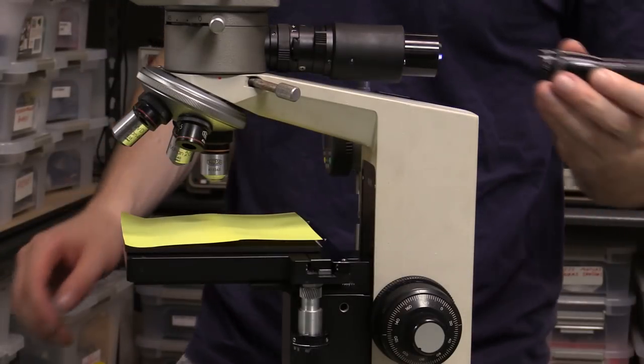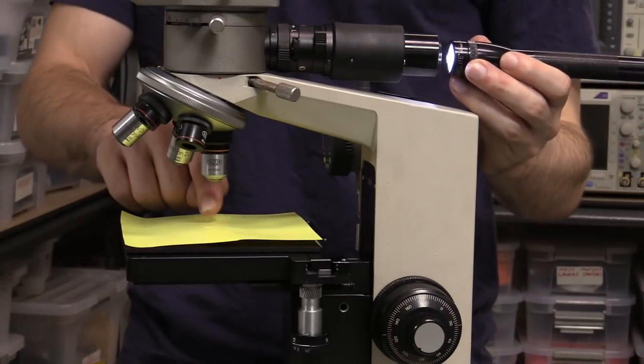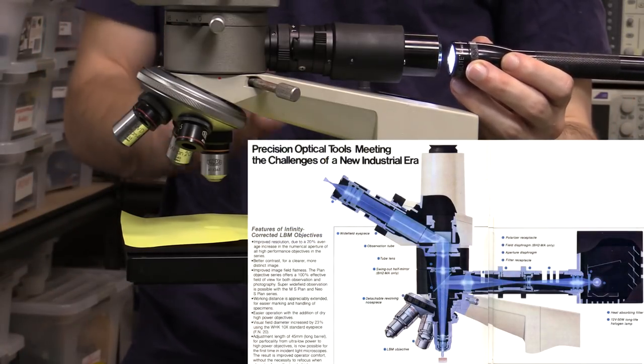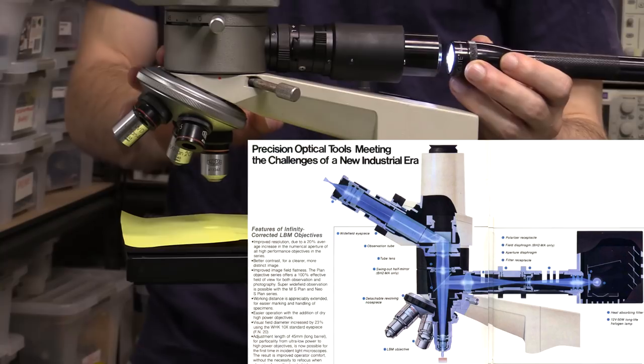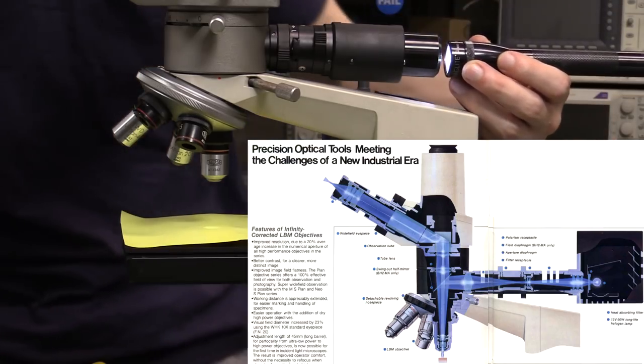Okay so if we put a torch through here you notice the light is redirected through some sort of mirror assembly in here down to the work piece.